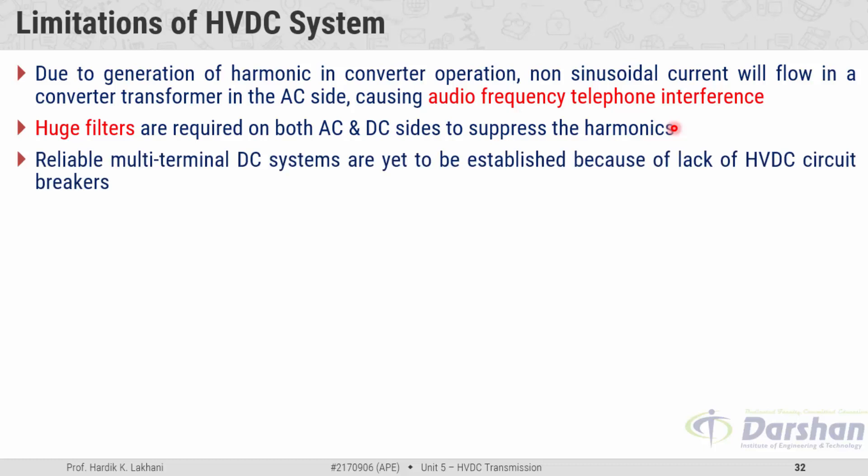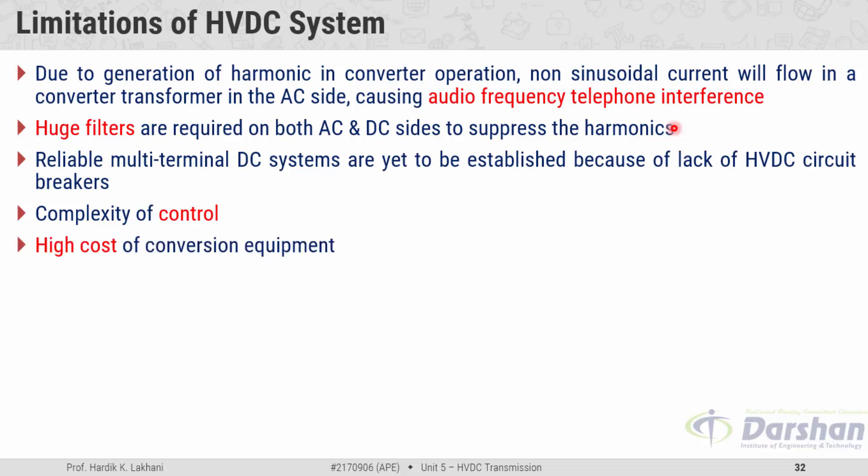Reliable multi-terminal DC systems are yet to be established because there are no HVDC circuit breakers available. The complexity of control is another limitation — to control the magnitude and direction of power, many equipment items must be controlled in synchronism, which is the biggest challenge. The highest cost of conversion equipment is also a limitation; the most costly part in an HVDC system is the valves, which are thyristors or IGBTs used to construct the rectifier or inverter.